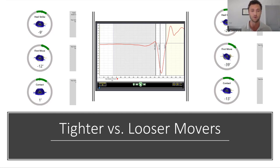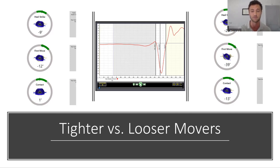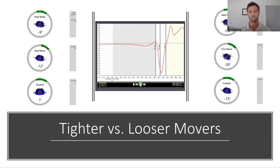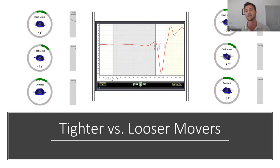We don't want to have a tighter mover in the cage trying to create negative 40 degrees of X-Factor at first move. You'll also be able to see this in the performance graph. With tighter movers, you're going to see less of a dip ideally around first move. The graph shown is more of a looser mover profile creating about 35 degrees of X-Factor. The graphs look similar in shape, but the tighter mover will have a smaller dip. Even with the tightest of movers, we still want to see some type of X-Factor around first move.